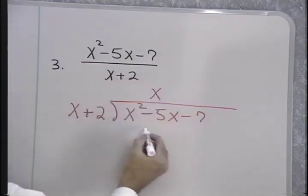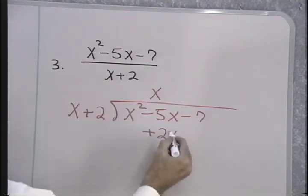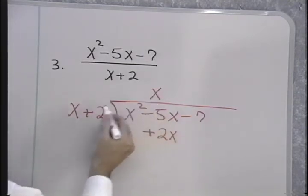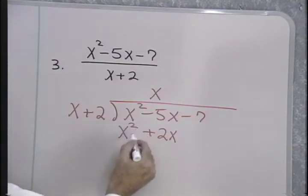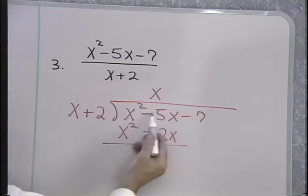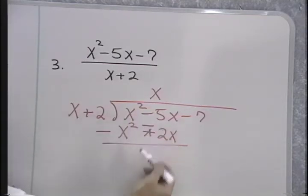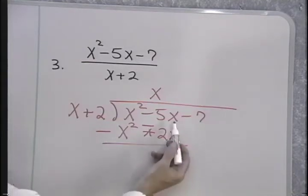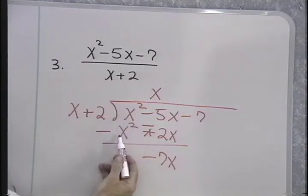Now, I multiply x times 2 is 2x, and I'll write that under the term it's similar to, x times x is x squared. Next, I want to subtract this polynomial from this polynomial, so I change each of the signs and add, because subtraction is addition of the opposite. Negative 5x plus negative 2x is negative 7x. Positive x squared plus negative x squared is 0.